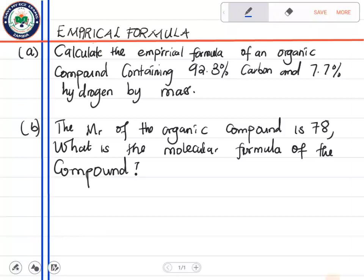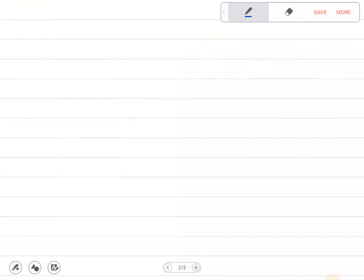The empirical formula is just the simplest formula in its simplest whole ratios. We're talking of elements in that compound that are expressed in simplicity, in simple ratios. So now how do we go about it?